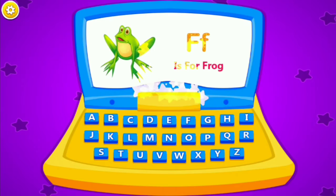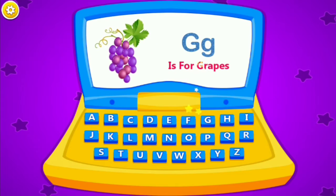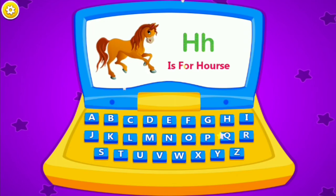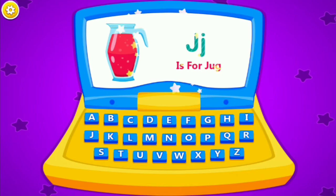F is for frog. G is for grapes. H is for hours. I is for ice cream. J is for...